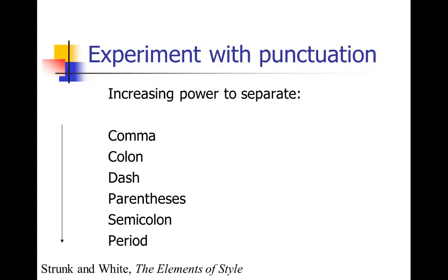The colon is a bigger pause than a comma. The dash is an even bigger pause — it allows you to drop whole descriptions or explanations right in the middle of your sentence, and your reader is totally okay with it. A parenthesis is where you're actually inserting something extra into the sentence, so it's a really big pause. A semicolon demarcates the boundary between two separate sentences that you want to connect. And then a period, of course, is a complete stop — that's your biggest pause.